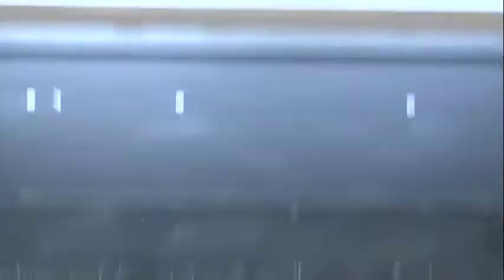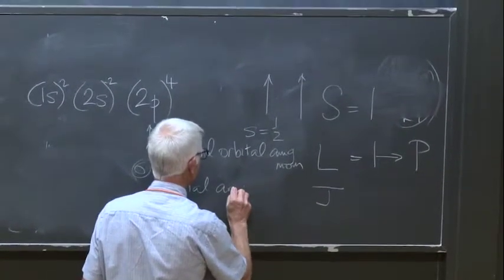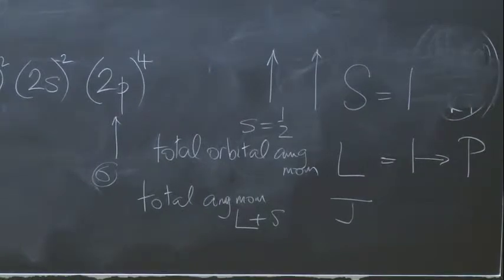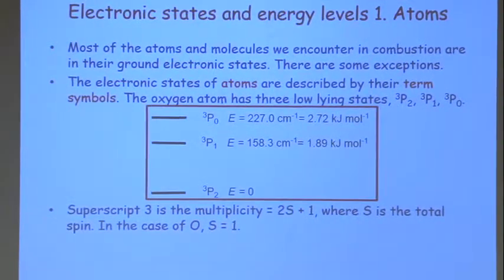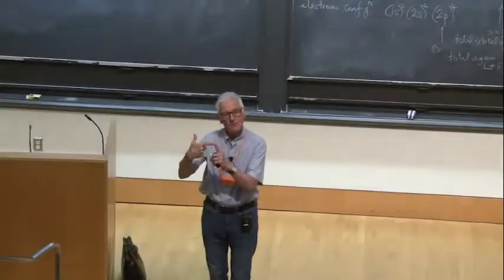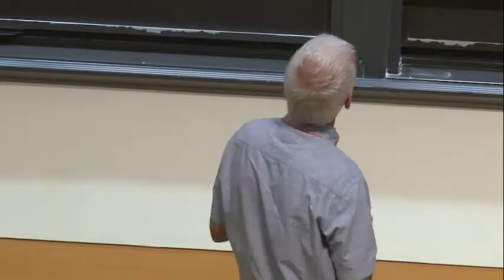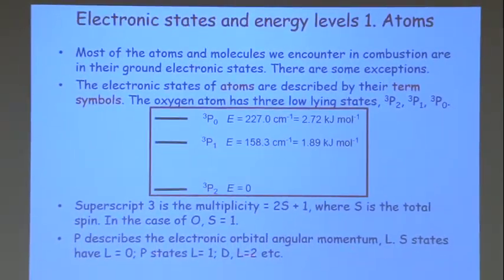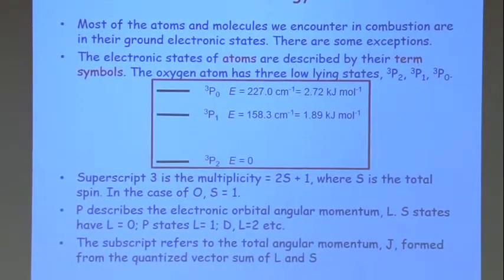P describes the electronic orbital angular momentum: S states have L equal to zero, P states L equal to one, D states L equal to two. The subscript refers to the total angular momentum J formed from the quantized vector sum of L and S. Other atoms: hydrogen is doublet S one-half, carbon is similar to oxygen but inverted, nitrogen is quartet S, and sulfur is triplet P like oxygen.